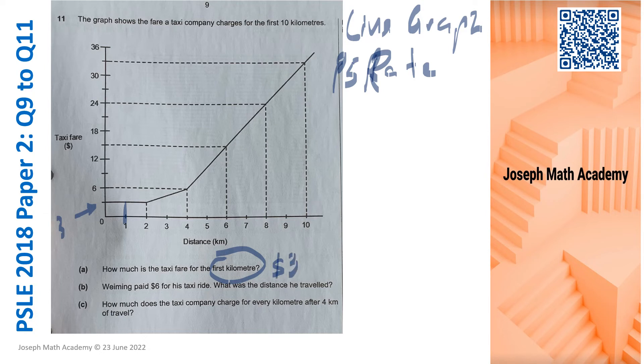Wei Ming paid $6 for the taxi ride. And what was the distance he traveled? So Wei Ming paid $6. $6 is somewhere here. So looking at the line graph is very easily done. So 4KM. So B is done.